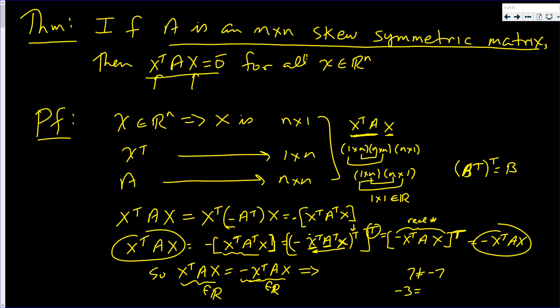Zero equals negative zero is true. This implies that x transpose A x, this real number, equals zero. And this is for all x in R^n.